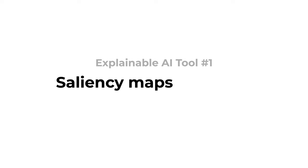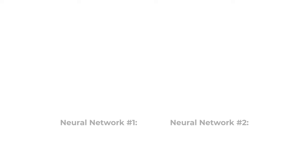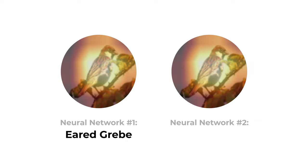Explainable AI tool number one: saliency maps highlight pixels the neural network used. Consider two neural networks. Neural network number one classifies the bird correctly, and its saliency map highlights the bird, so looks good. Neural network number two looks at the same pixels, but it gets the bird species wrong. Why? How? We can't tell.